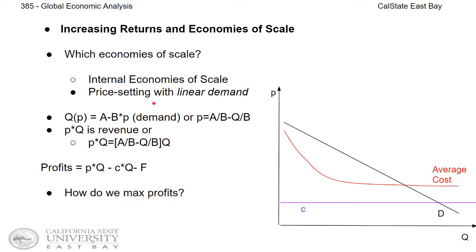We're going to use a simple example to illustrate price setting with monopoly power. In particular, we are going to assume some type of a linear demand curve, where demand for your product comes in the form of A minus B times P.